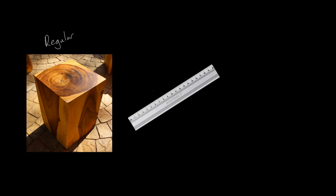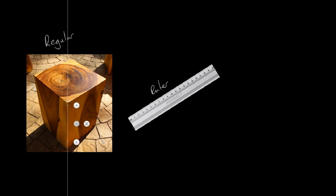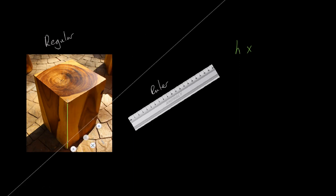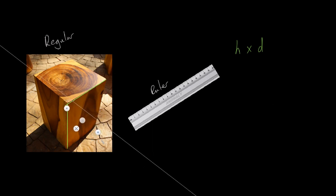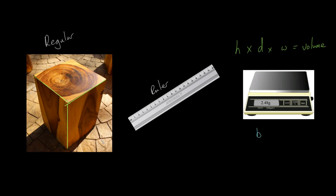For a regular object, job number one is to get yourself a ruler. You need to measure the sides: you measure the height of the block, the depth of the block, and the width of the block. Those numbers multiplied together give you the volume. You also need the mass, so you just place your block on a standard balance and it gives you a value.